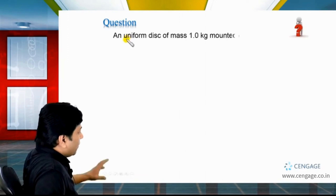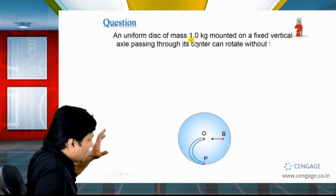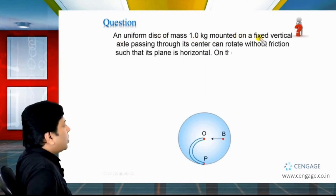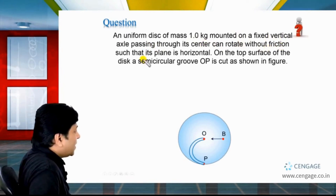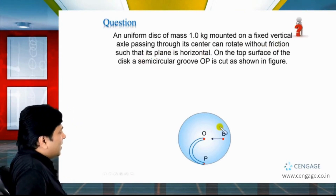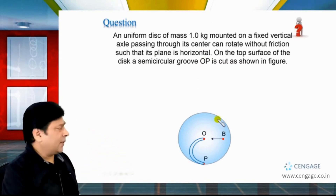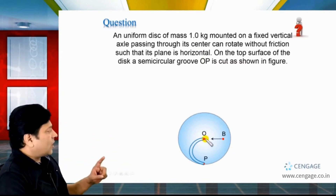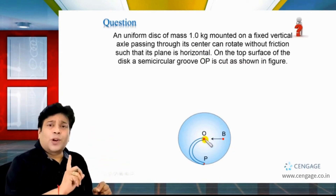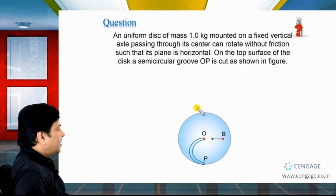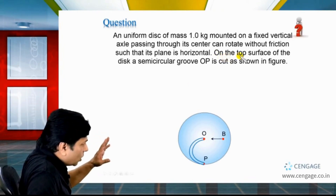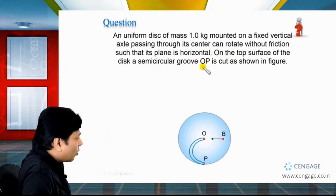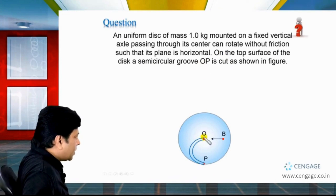In this problem, it is given a uniform disc of mass 1 kg mounted on a fixed vertical axle passing through its center, which can rotate without friction such that its plane is horizontal. The axis of rotation passes through O and is vertical, and the plane of the disc is always horizontal. On the top surface of the disc, there is a semicircular groove OP.